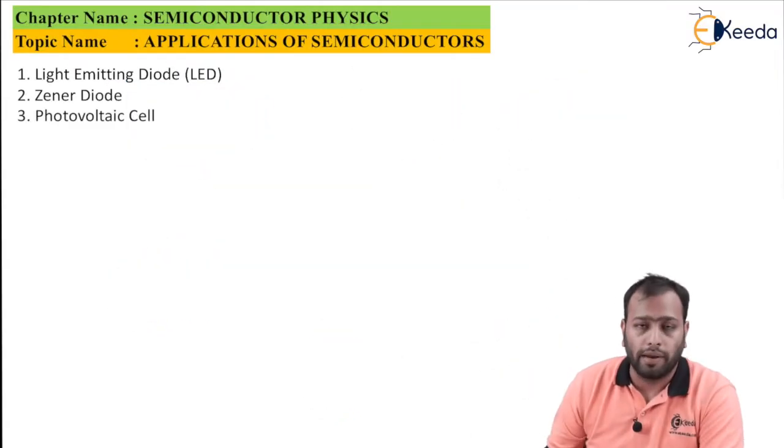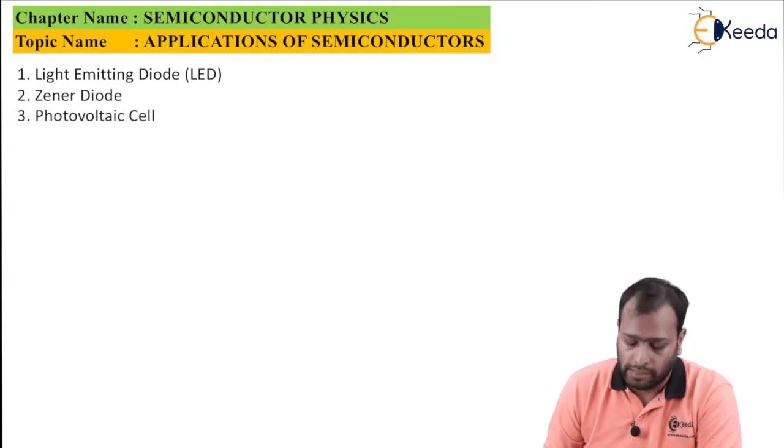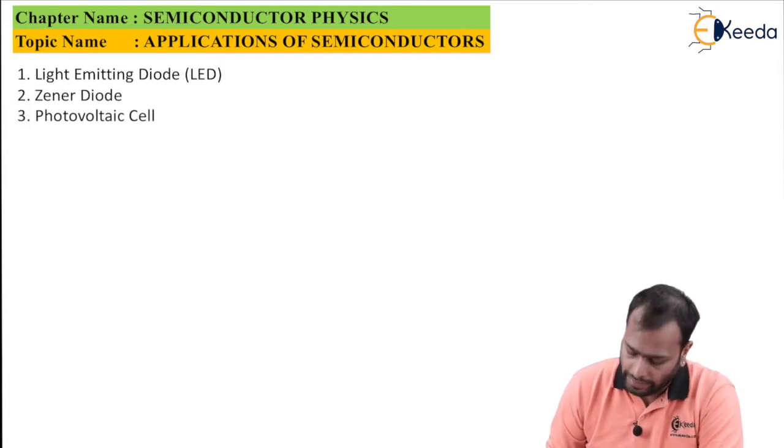Now semiconductors are basically used in LEDs, zener diodes, and photovoltaic cells. Let's start with the first: LED.